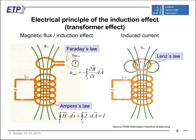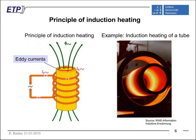We don't want to speak only about the transformer effect — the energy transfer between the primary coil and the secondary coil. When speaking of induction heating, the secondary coil normally consists of a conducting body, like a cylindrical workpiece to be heated. Due to the electrical conductivity of this workpiece, we also induce electric current. These currents run in recirculating loops and are therefore called eddy currents. All these eddy currents create a magnetic field which leads to the damping effect.